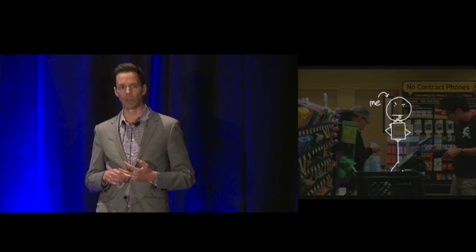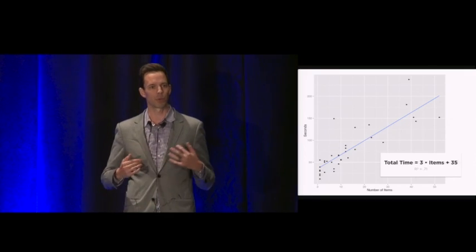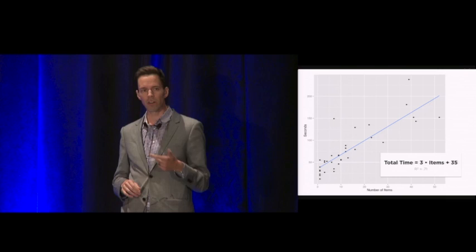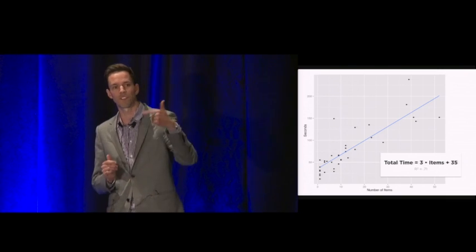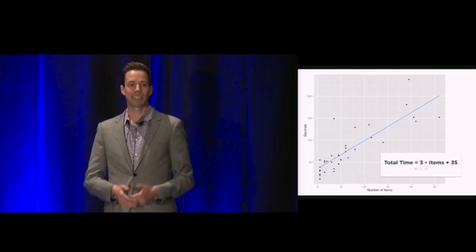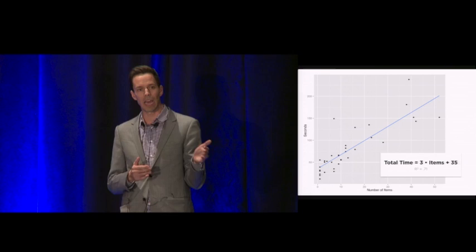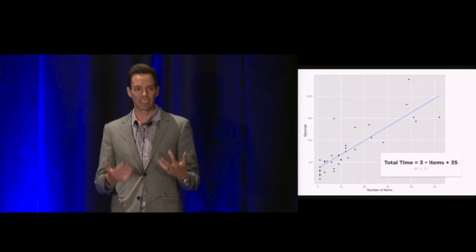And that data looked really interesting. Look at that equation there. Real significant. That three means three seconds per item to scan the item and to bag it. But that 35 should be a zero. It says 35 seconds for zero items. What? That's that 35 seconds for paying, for saying hi, how are you, goodbye, all of that. There's this significant Y intercept.